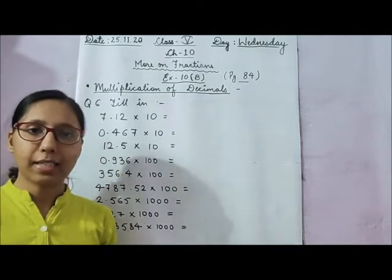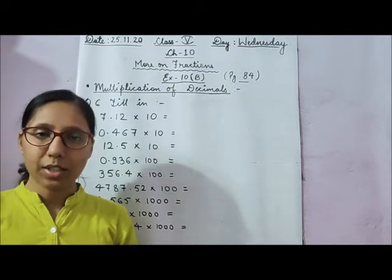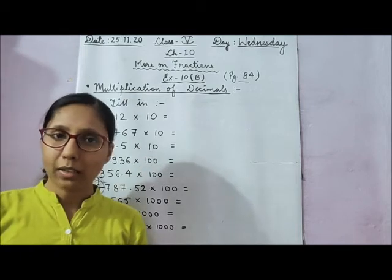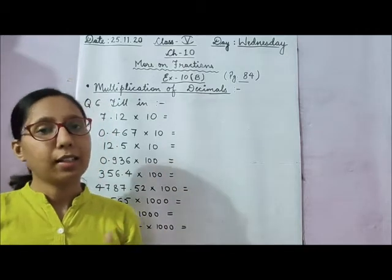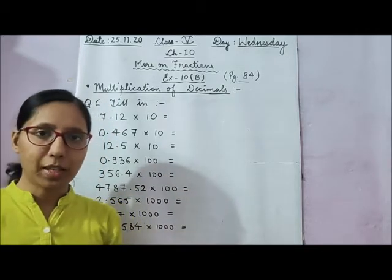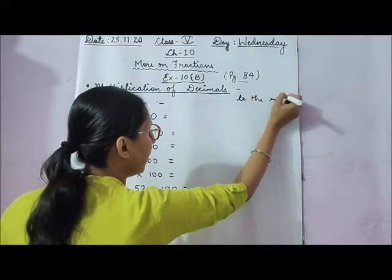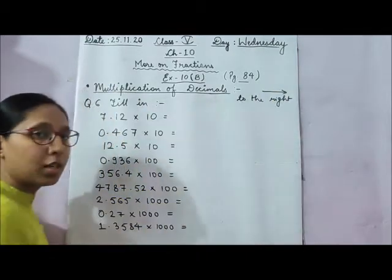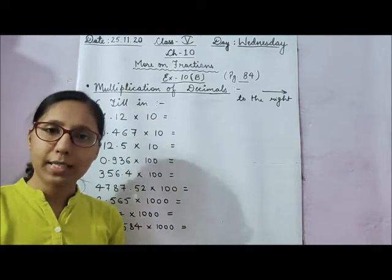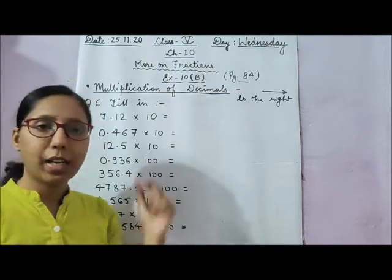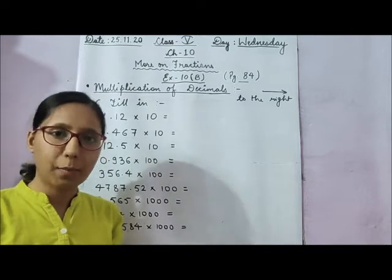Now we are going to multiply decimal numbers by 10, 100, and 1000. There are two ways to solve this. The first way is to multiply normally as before — remove the point, multiply, then count digits after the decimal point. The second way is the point shifting method: shift the decimal point to the right. If multiplying by 10, shift 1 digit. If multiplying by 100, shift 2 digits. If multiplying by 1000, shift 3 digits.